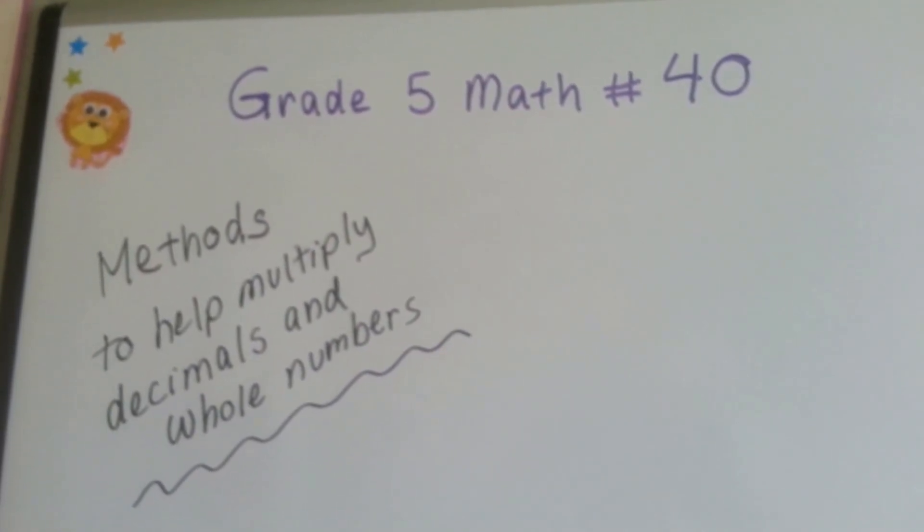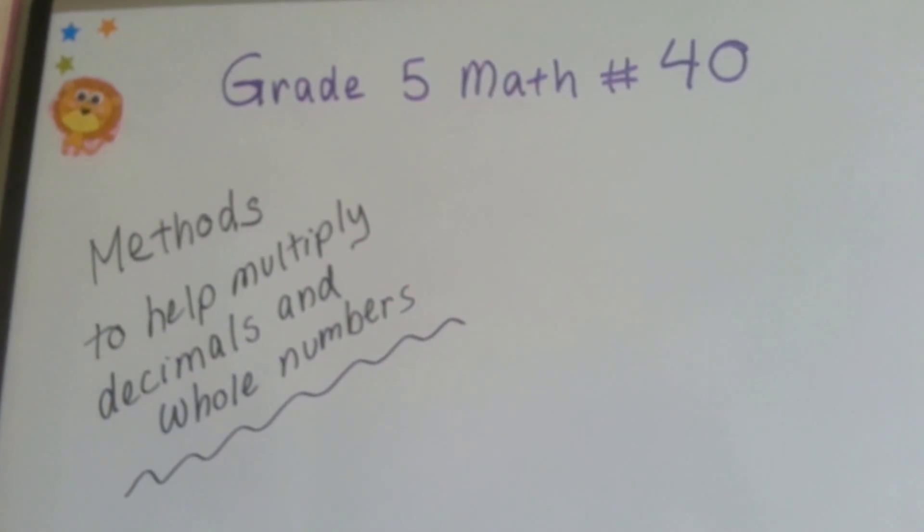Grade 5 math number 40: Methods to Help Multiply Decimals and Whole Numbers.